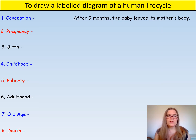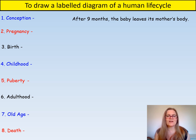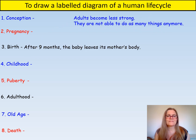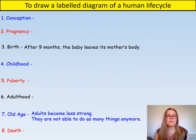Now we need to be able to explain each stage of the life cycle. Where should this explanation go? After nine months the baby leaves its mother's body — that's right, it's birth. What about 'adults become less strong and are not able to do as many things anymore'? Yes, that's old age. Usually old people can't do as much anymore so they retire and enjoy easier activities such as walking instead of running marathons.